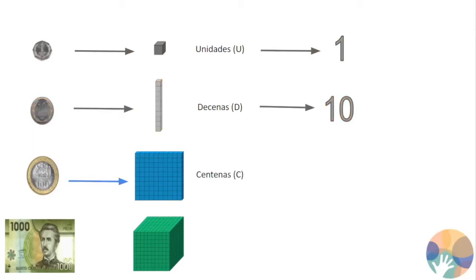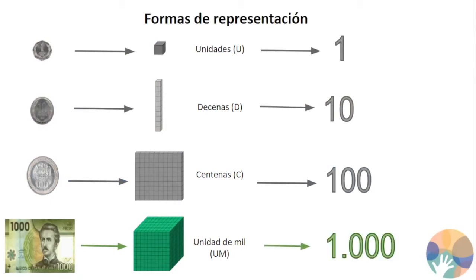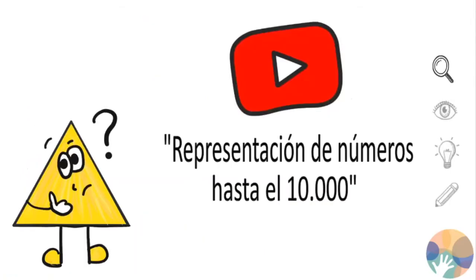Una moneda de 100 pesos equivale a una centena, y el número se escribe así. Finalmente, el billete de 1.000 pesos, o como a veces le decimos, lucas, equivale a la cantidad de 1.000, representando una unidad de 1.000. Si tienes dudas o quieres saber más sobre las representaciones de los números, te invitamos a revisar el material disponible en YouTube: Representaciones de Números hasta el 10.000. El link te lo dejamos abajo en la descripción del video.